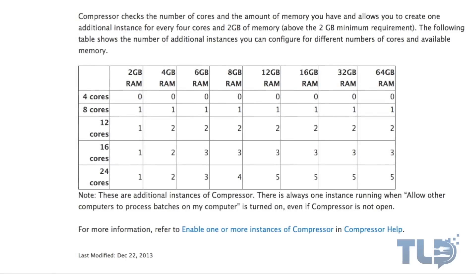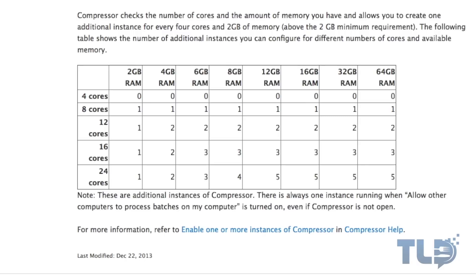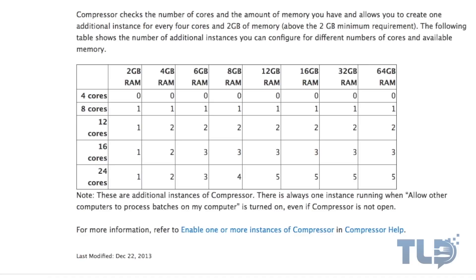If you check out Apple's support page, it ranges from 4, 8, 12, 16, and 24 cores — which is actually based on hyperthreading. So the 6-core Mac Pro features 12 threads, which is why it falls in that middle category. Even maxed out at 64 GB of RAM, you can only add an additional two instances with Compressor. The 8-core, because it has 16 threads, jumps up to the next tier and you can add an additional three instances. And if you had the 12-core model maxed out at 64 GB, you can bump that up to an additional five.